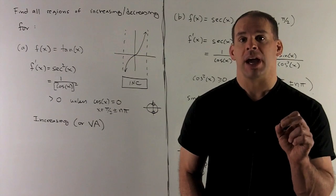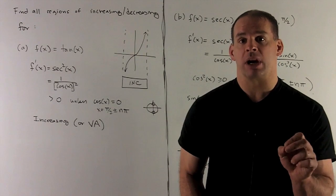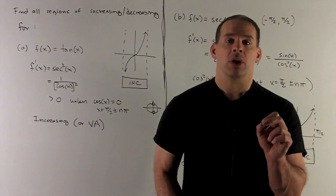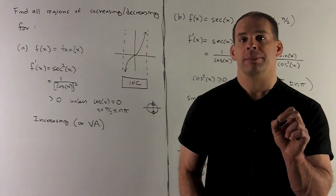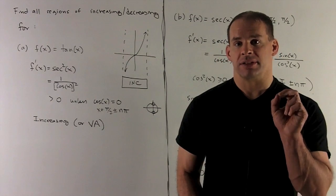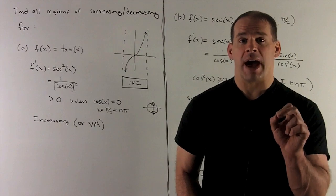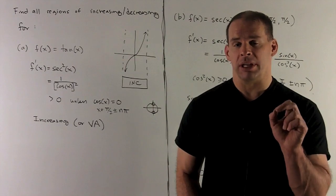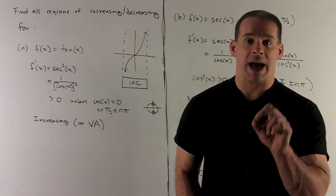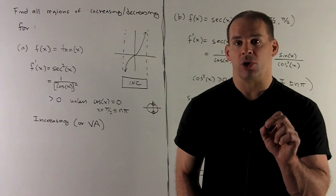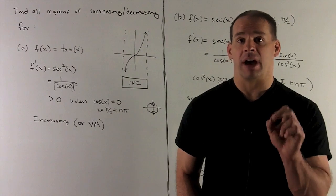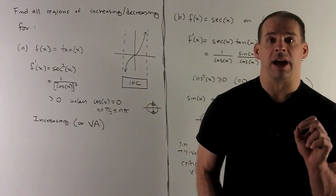Okay, for tangent, I take its derivative. I get secant squared of x. Now note, no matter what I put in here, as long as it's defined, what's going to come out is going to get squared. So it's going to be either 0 or a positive number. So we're always going to be increasing unless I'm undefined.